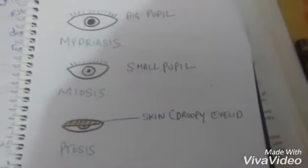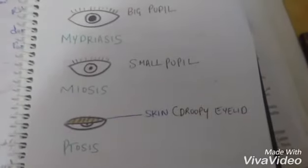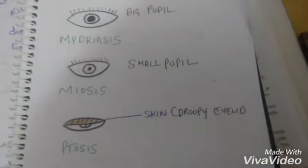So today we will be talking about the differences between mydriasis, meiosis and ptosis. These are very confusing terms, so we will be talking about these three.